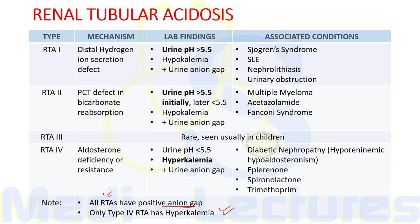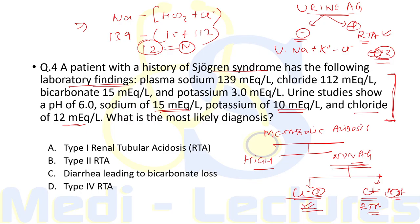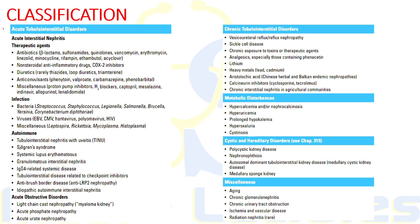In our question, the patient with Sjögren's syndrome has a positive urine anion gap, pH more than 5.5, and associated hypokalemia — all features suggestive of type 1 (distal) renal tubular acidosis. Cystic and hereditary disorders are discussed in a separate chapter in detail, which is the homework for all students — Chapter 315 from Harrison.